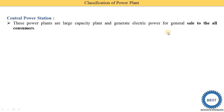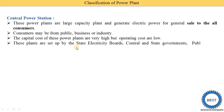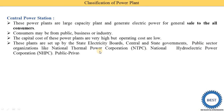The consumers of a central power plant may be public, businesses, or industries. The capital costs of these plants are very high but operating costs are low because of their large size. These plants are set up by the State Electricity Board, central and state governments, and public sector organizations like NTPC (National Thermal Power Corporation), NHPC (National Hydroelectric Power Corporation), and public or private sector combinations.